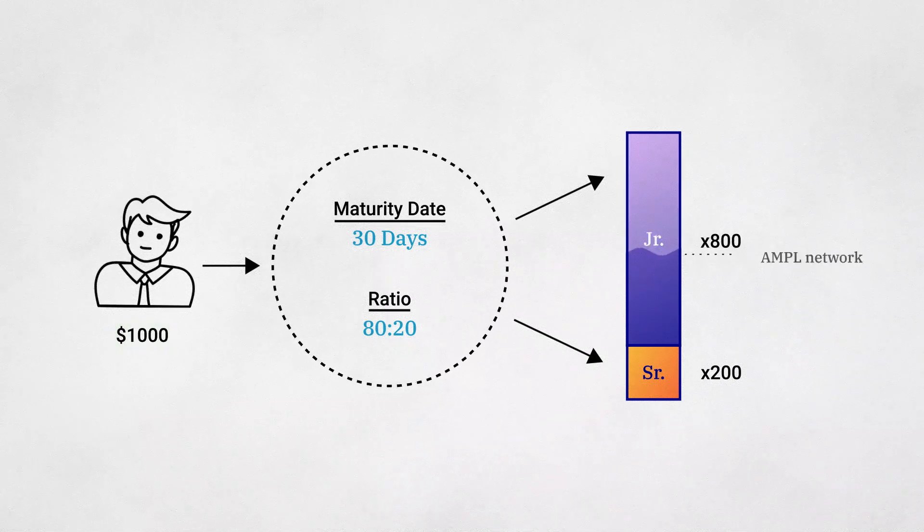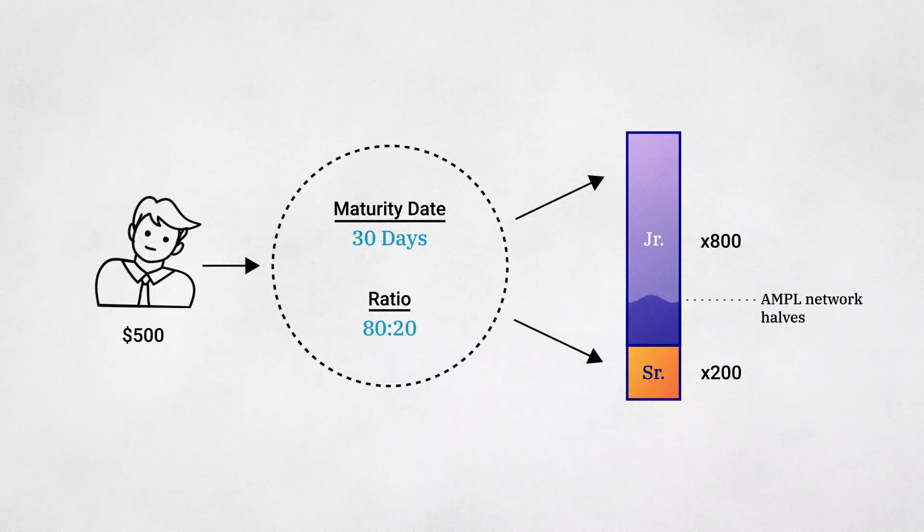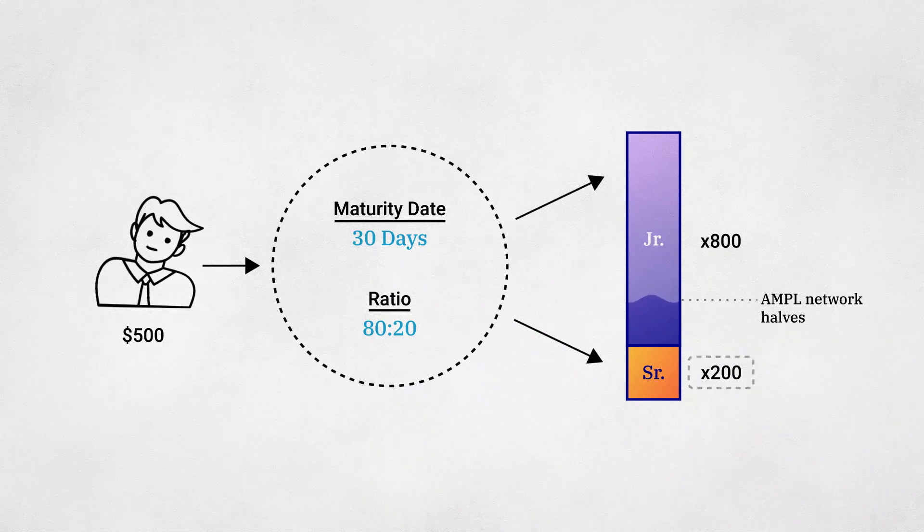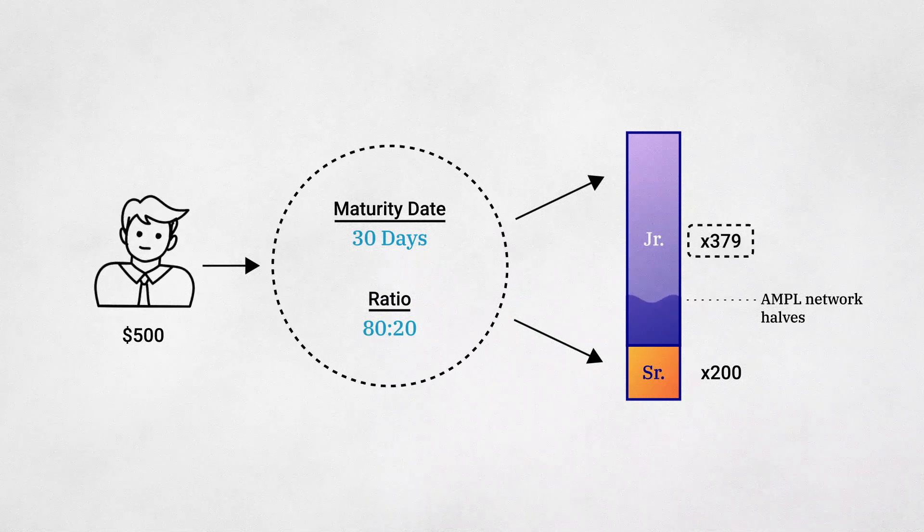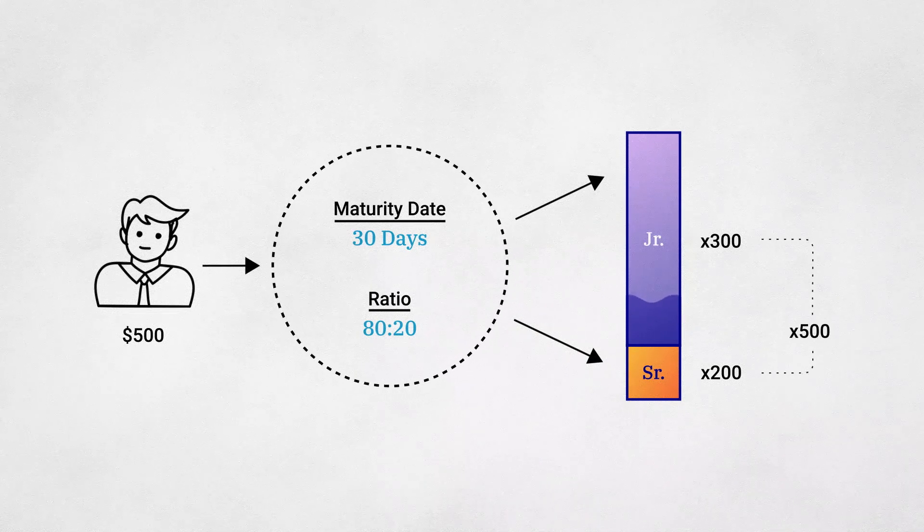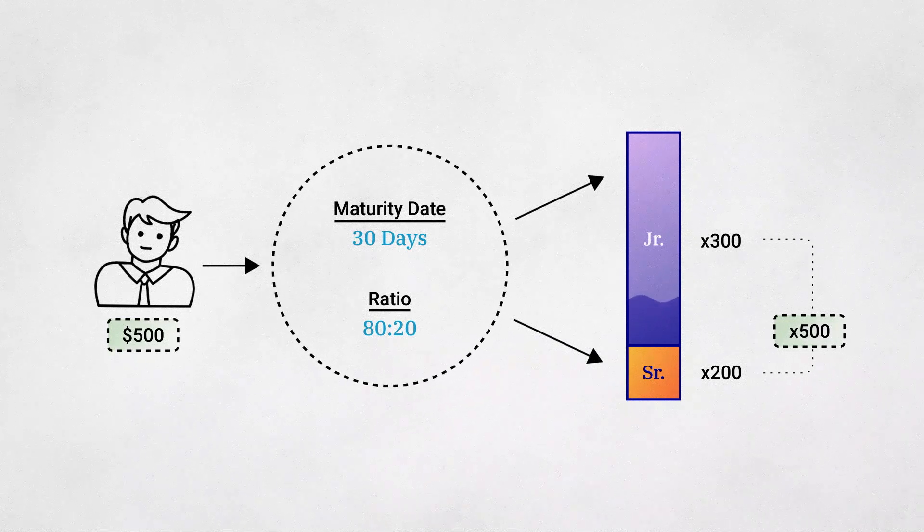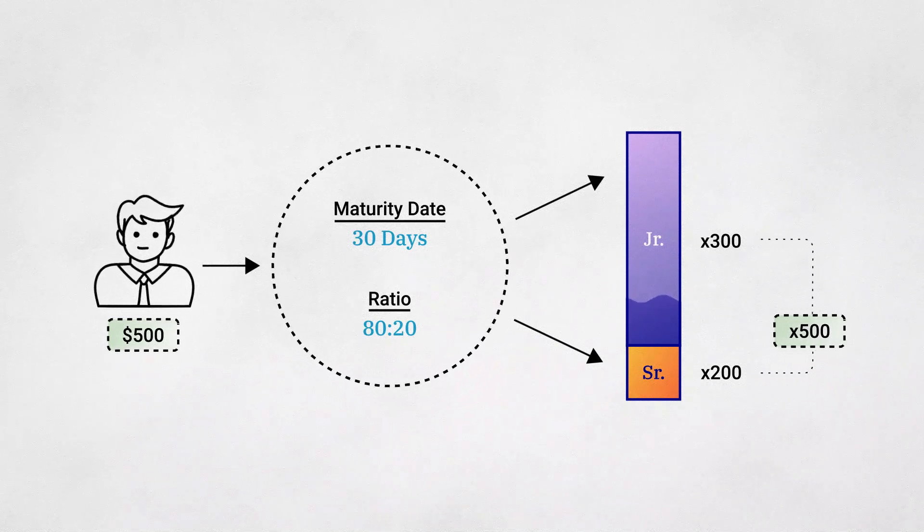Similarly, if the Ample network were to halve in size over the 30-day period, Bob's senior tranche tokens will still be redeemable for $200 worth of Ample, but his junior tranche tokens will be redeemable for $300 Ample. Just as before, the total quantity of Ample between senior and junior tranches is equivalent to what Bob would have owned if he simply held Ample over the 30-day period.